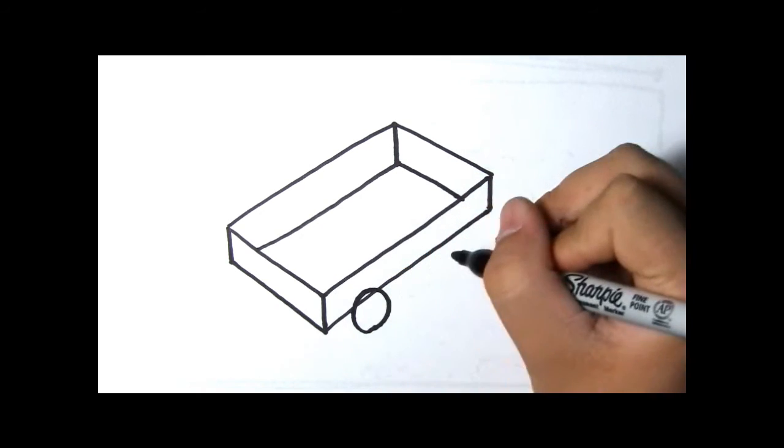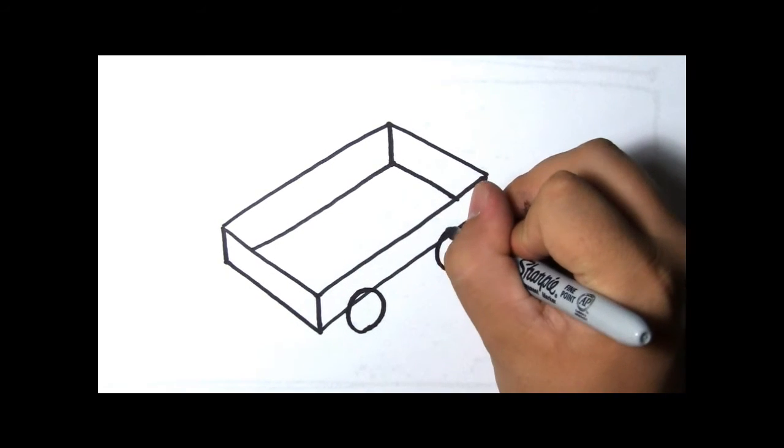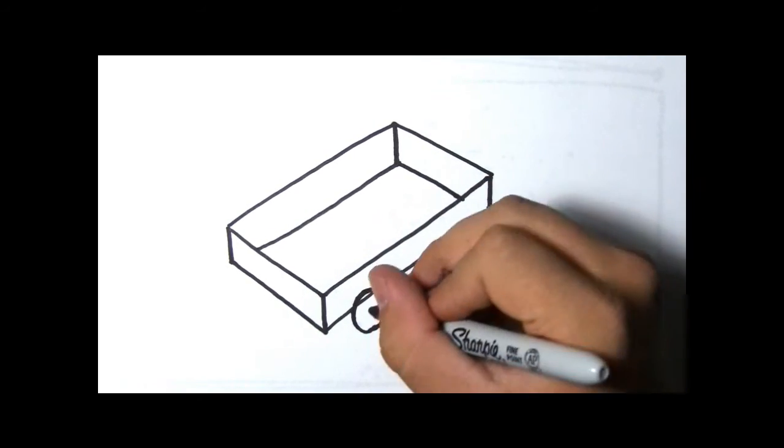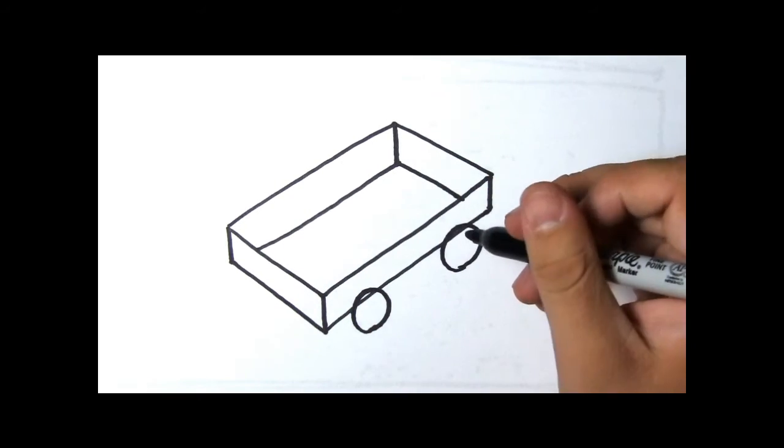We're going to draw two circles. The other wheels would be on the other side, but we can't see them.